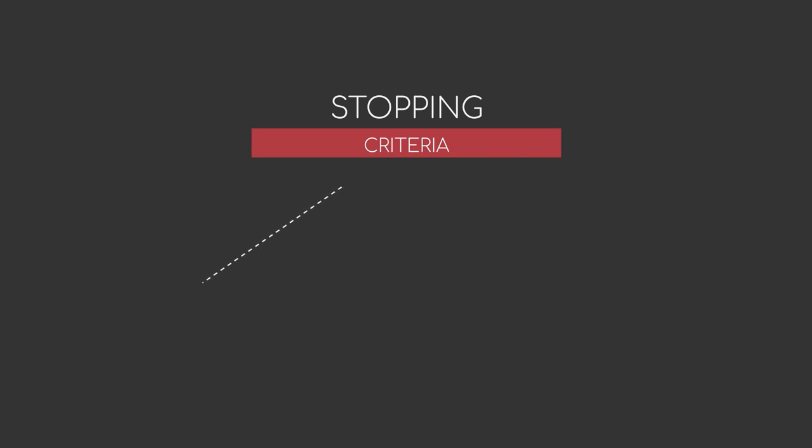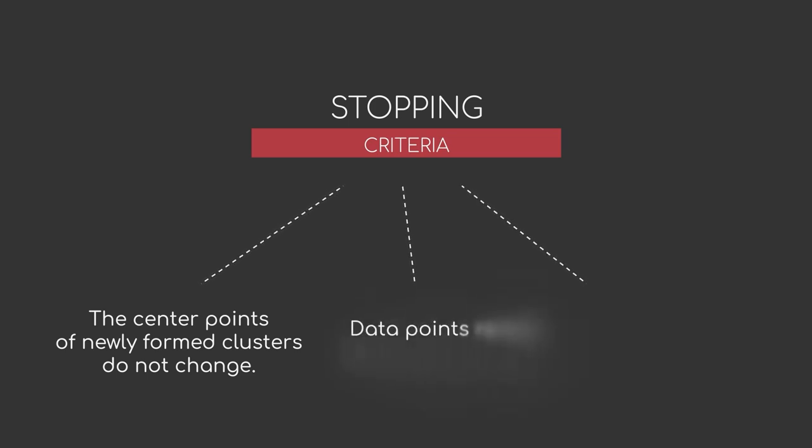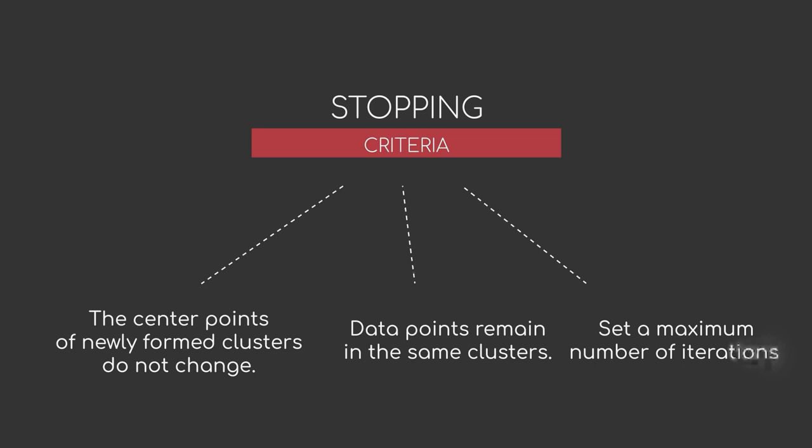Some of the possible options for stopping criteria are the following. The center points of newly formed clusters do not change, which leaves us with very stable clusters. Or, data points remain in the same clusters, meaning the assignment does not change anymore. Or, we just set a maximum number of iterations and stop after that.